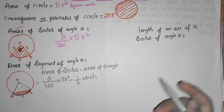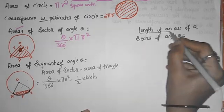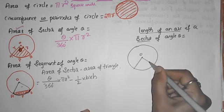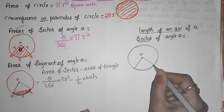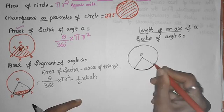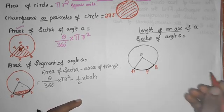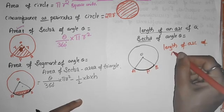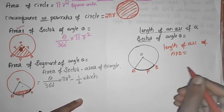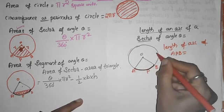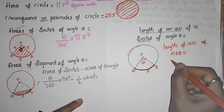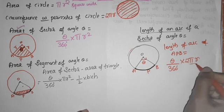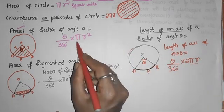Length of an arc of sector. So this is a circle with center O, this is sector — we need to find out length of arc. This is arc APB. We will use: length means, we know this is a perimeter of circle. If the angle is theta, then we will use formula theta by 360 degree into 2 pi r. If they have arc length, we need to use perimeter here. If area, we need to use pi r square.